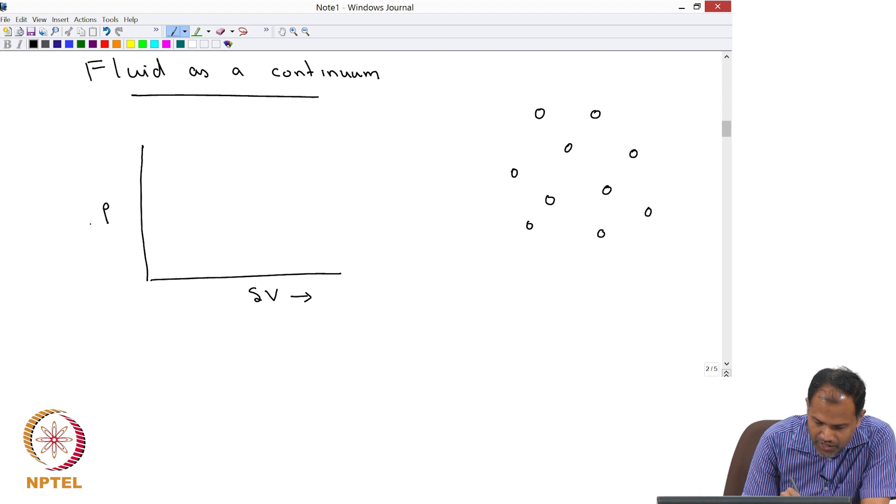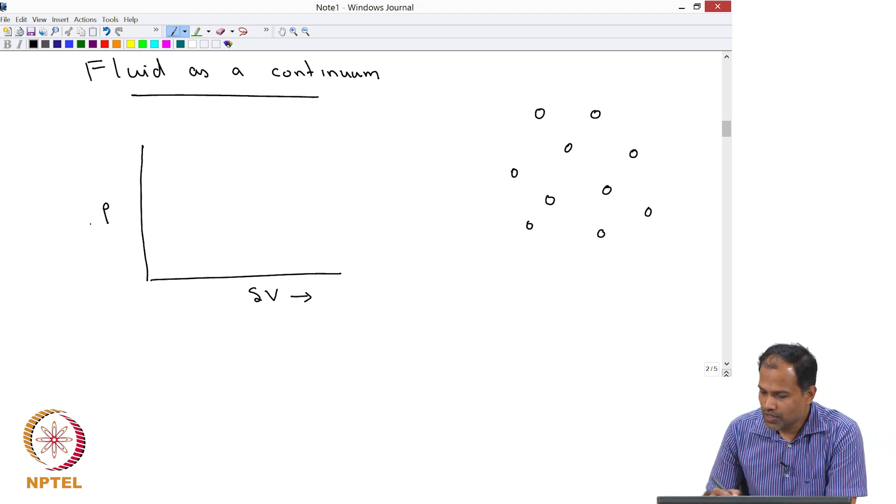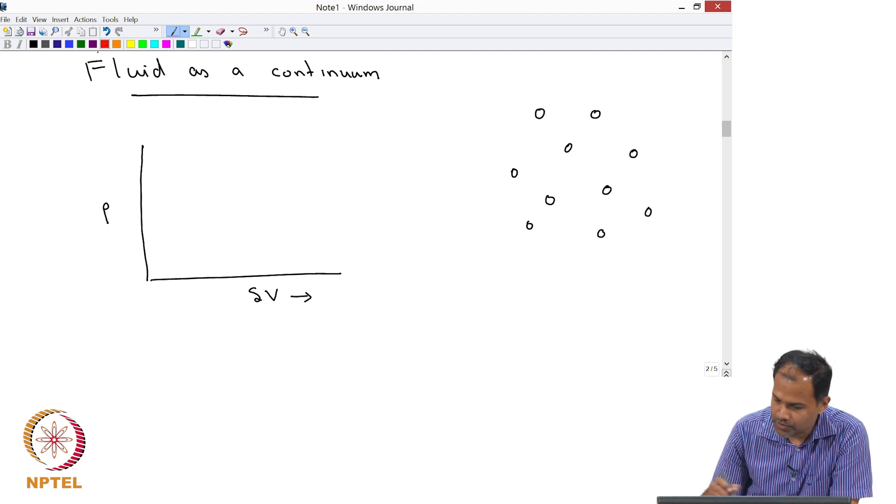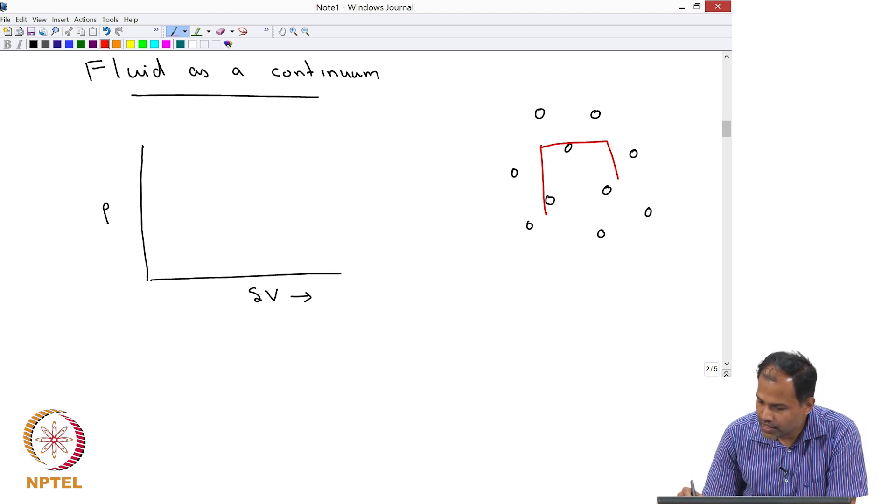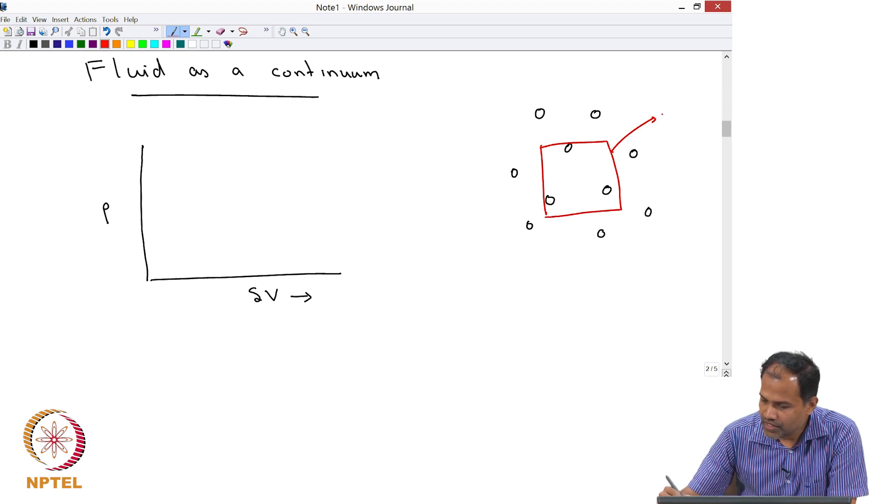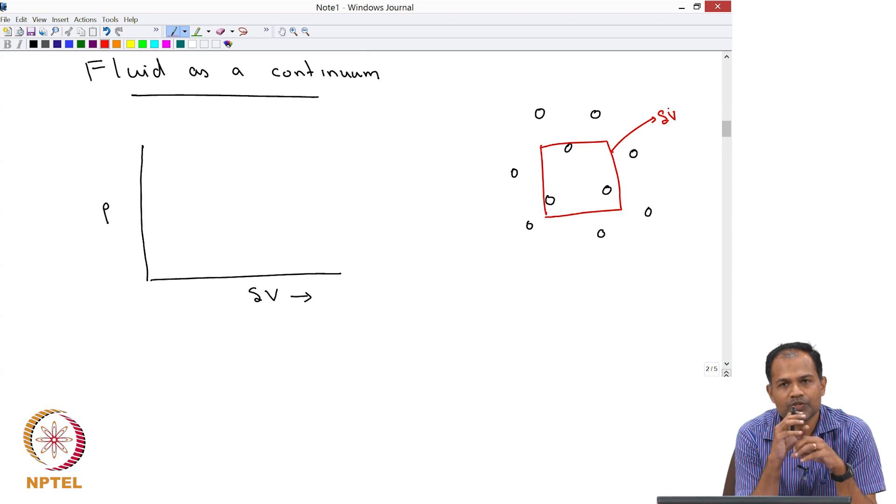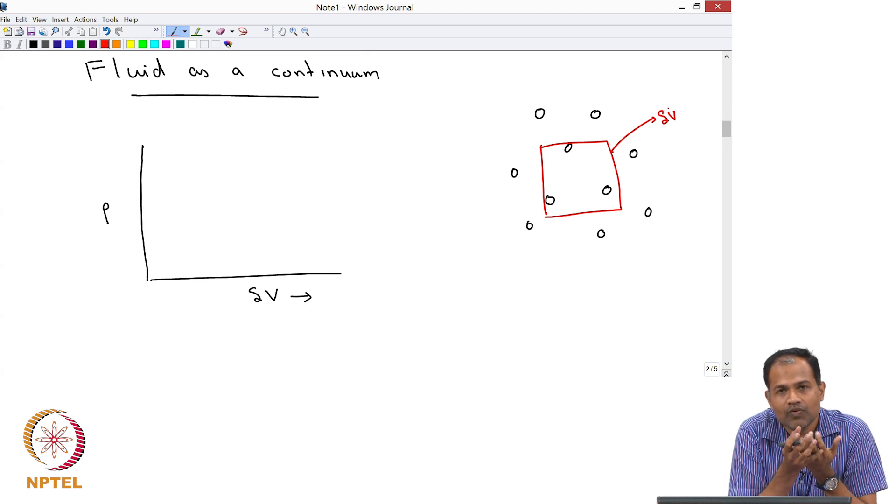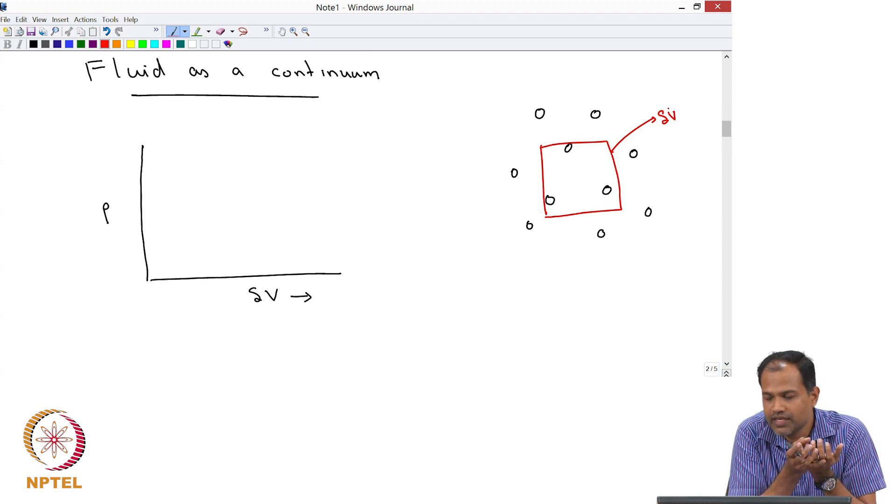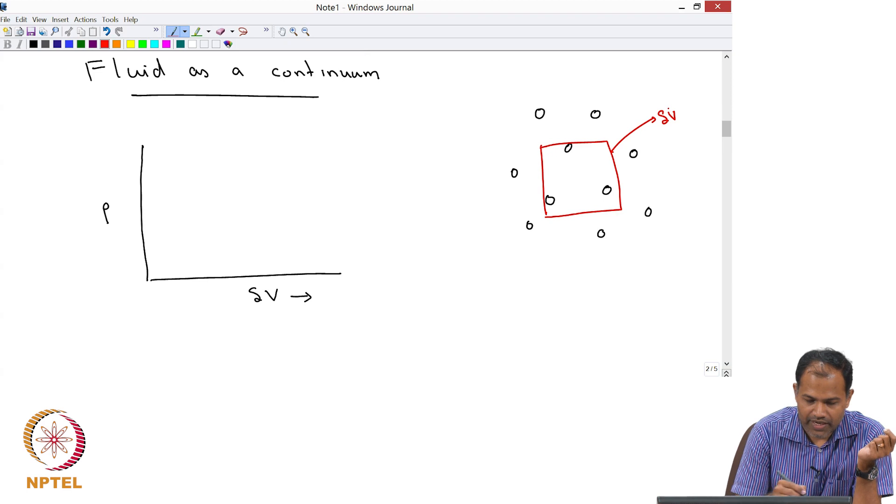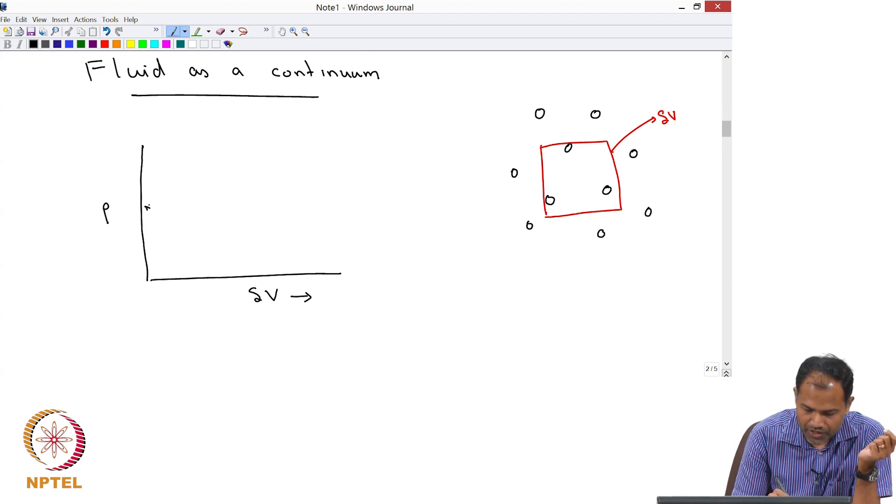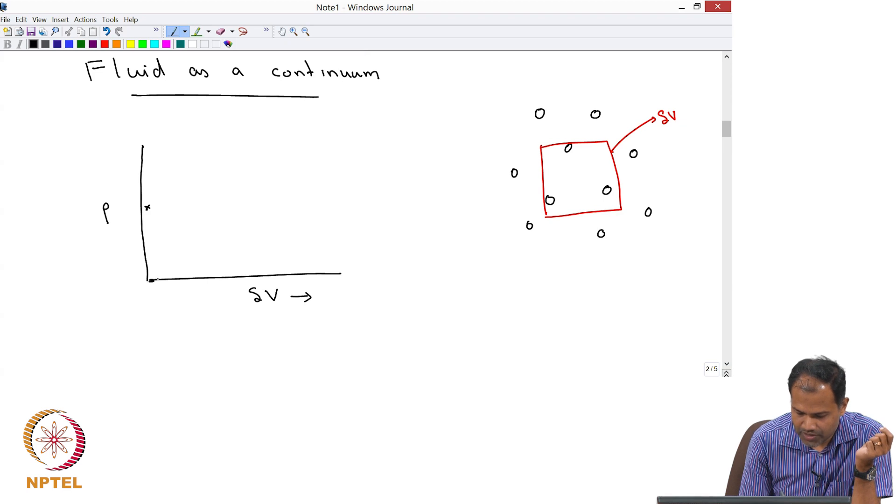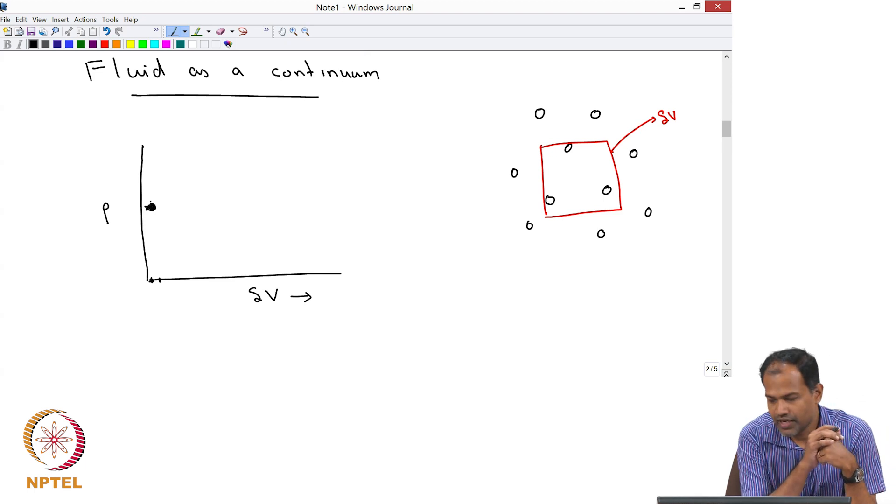My intention now is to plot a graph where on the x-axis I will plot volume and on the y-axis I will plot density. I am just going to take a small volume, delta v, a small volume where I can see individual molecules, and then I am going to calculate what is the density. I would calculate density as total mass divided by delta v. Let us say that is the point that I have gotten.